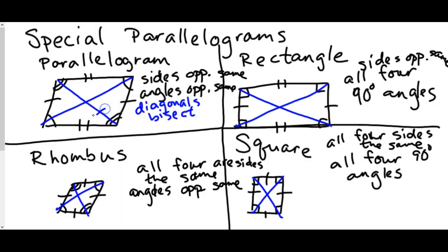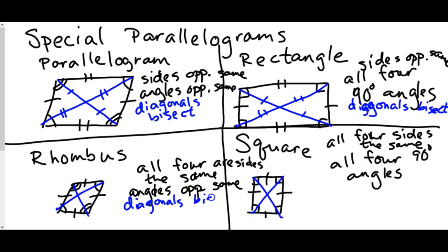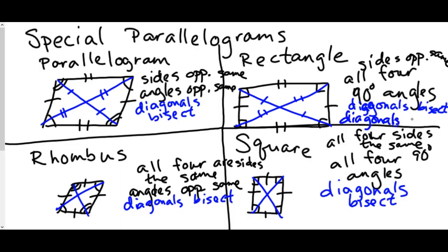The diagonals cut each other in half, so one side of a diagonal is the same as the other. That property works for all four shapes. The rectangle has another unique property: its diagonals are also congruent, meaning the two diagonals are the same length.